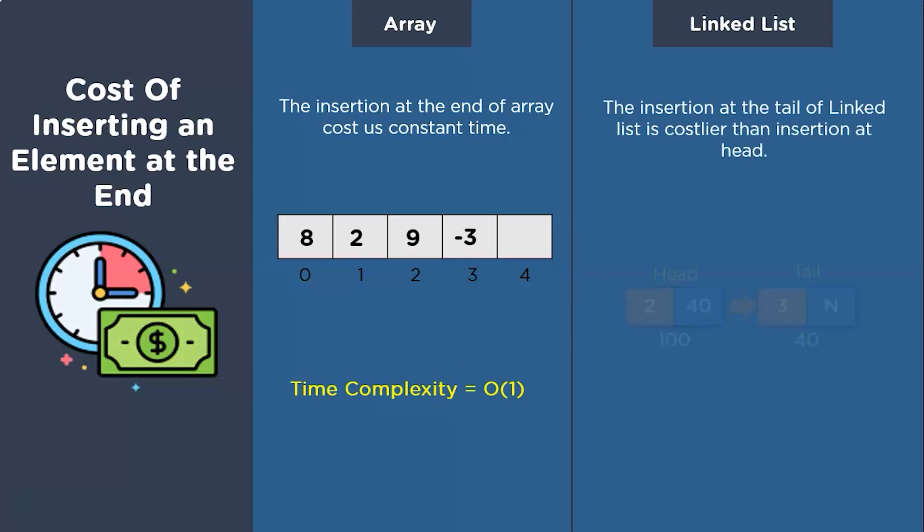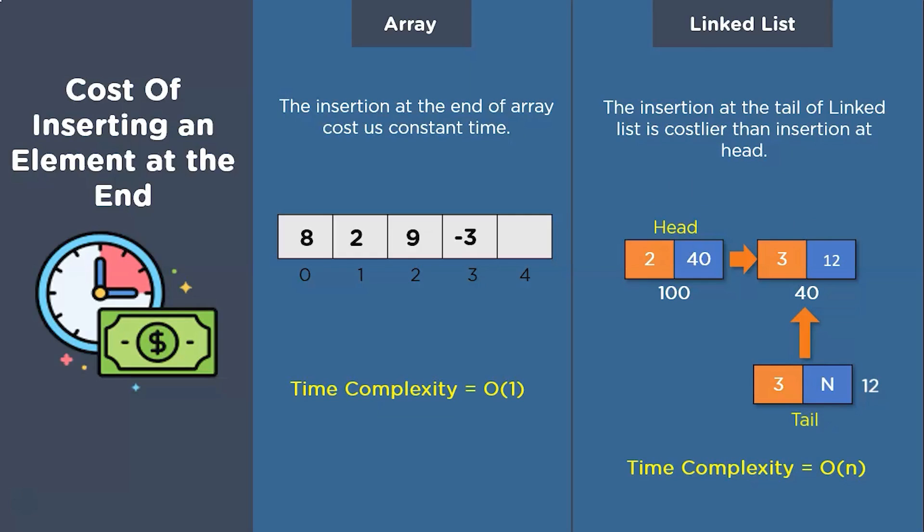Meanwhile, in the case of a linked list, this operation is comparatively costlier than arrays. For instance, consider this structure as a linked list and we want to insert an element at the end of this linked list. So to do that, we will need to traverse the whole linked list until we reach the tail node. Once we get there, the reference part of the previous tail node gets linked to the new node, and the element gets inserted. But the traversal for this operation costs us O(n) itself. Also, the insertion for a given ith index costs us O(n) in the case of both data structures.